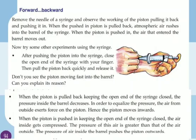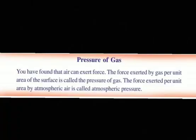In the first case, the piston was pulled inwards because there was no air, so there was space for the piston to go inwards. In the second case, since there was air, the piston couldn't go inwards because the air pushed the piston outward. So we can say that the force exerted by gas per unit area is called the pressure of gas, and the force exerted per unit area by atmospheric air is called the atmospheric pressure.